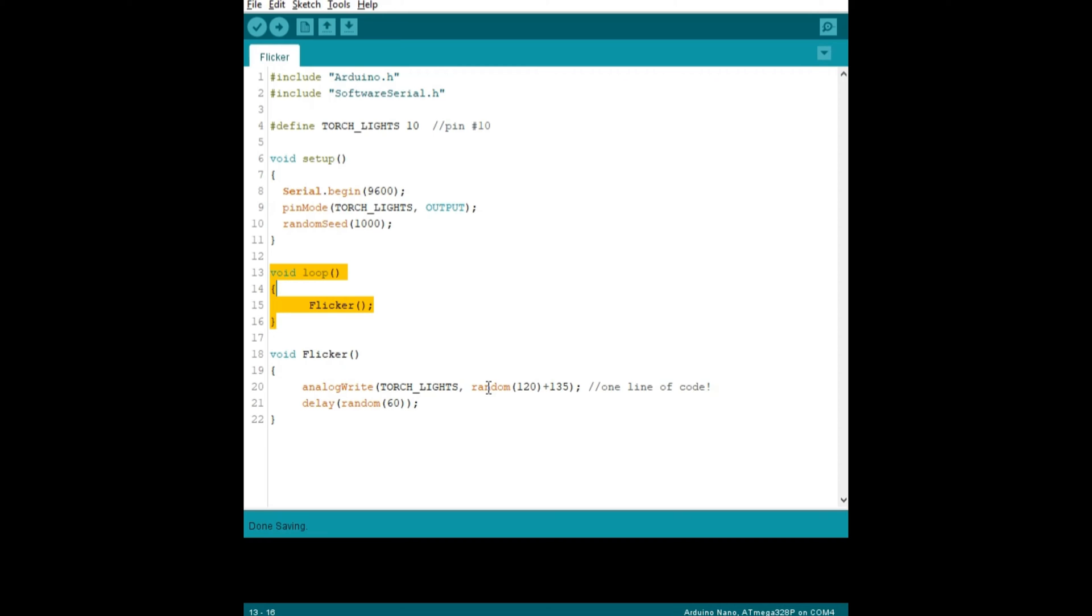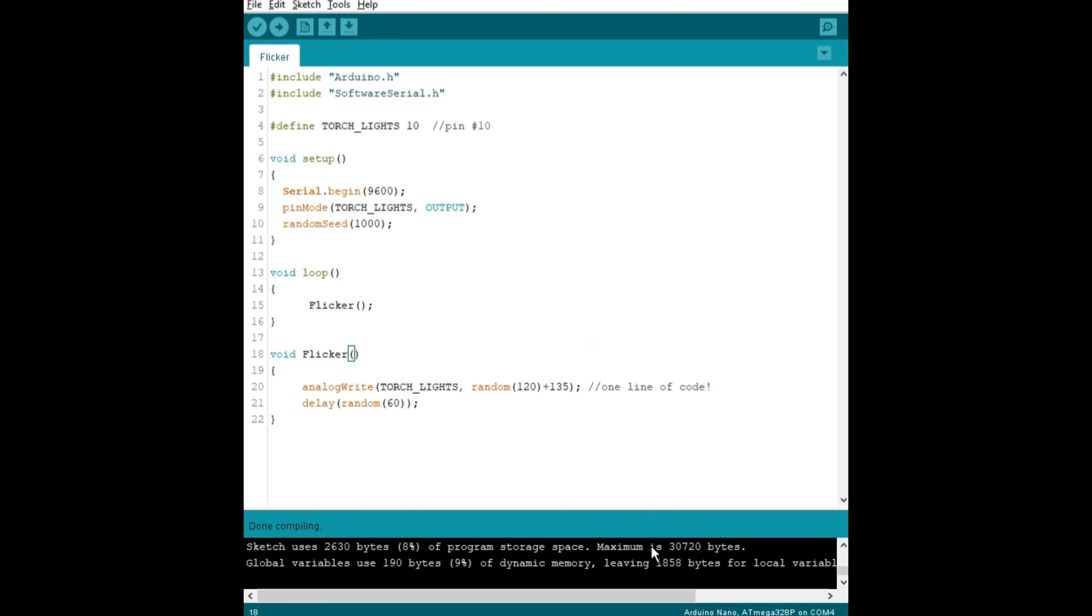So if we compile that, make sure that it works. Done compiling. But the most important part is this analog write feature and the torch lights and then this random number. That's all we need. That's the one line of code that's going to flicker.